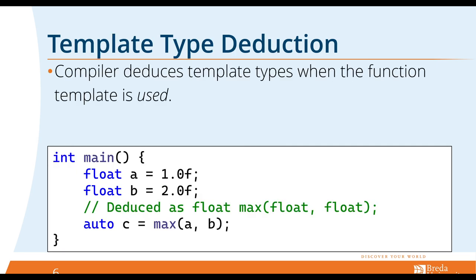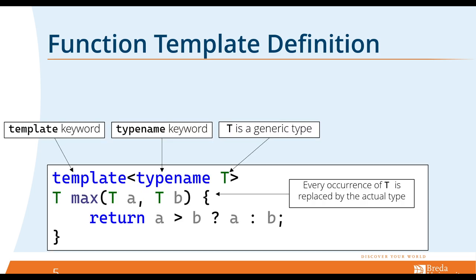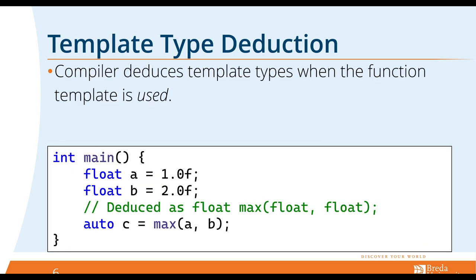Given the function template defined in the previous slide, the function template is invoked just like any other function. In this case, the compiler will automatically deduce the template arguments as float values because the function is invoked with float argument types. A and B are float, and then we call the max function with two float types, which will deduce to a function that takes two float parameters and returns a float. Simple.